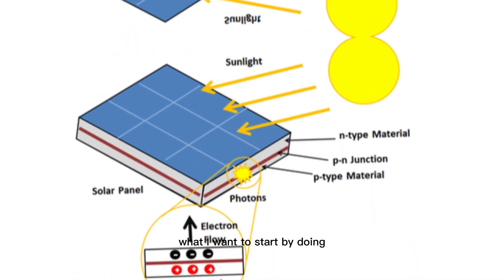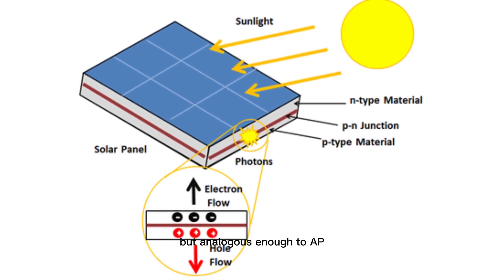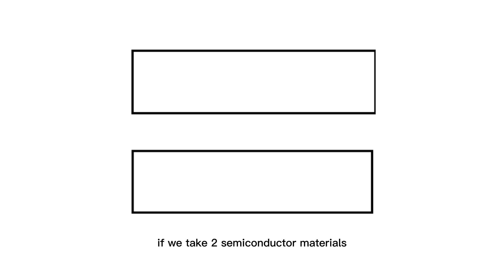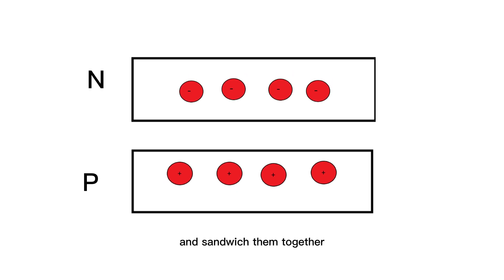What I want to start by doing is looking at a traditional photovoltaic cell as they are simpler but analogous enough to a perovskite solar cell that they can teach us a lot of the underlying physics. If we take two semiconductor materials, one that's positively charged, a P-type material, and one that's negatively charged, an N-type material, and sandwich them together.